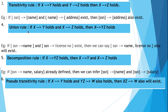The next rule is the union rule. If x to y exists and x to z exists, then we can define a new dependency from x to yz — the union of the right-hand side attributes. For example, if SSN to name and SSN to license number exist, we can define a new dependency from SSN to name, license number.